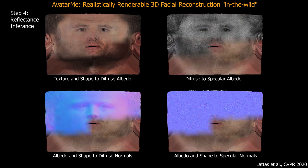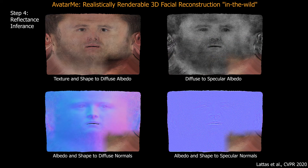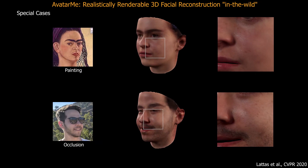Finally, we infer high-resolution reflectance maps by training image translation networks that utilize both geometry and texture. From these, we also infer the head topology.